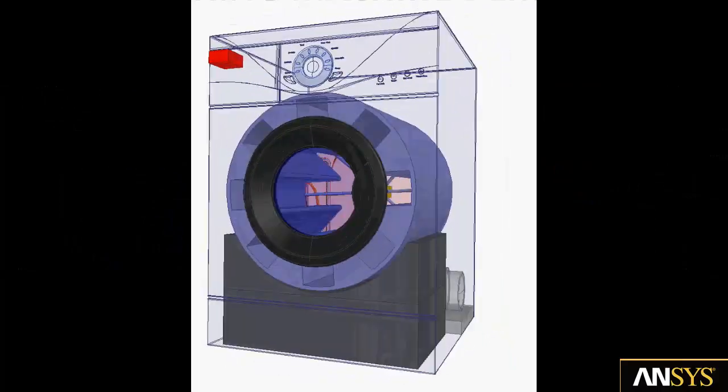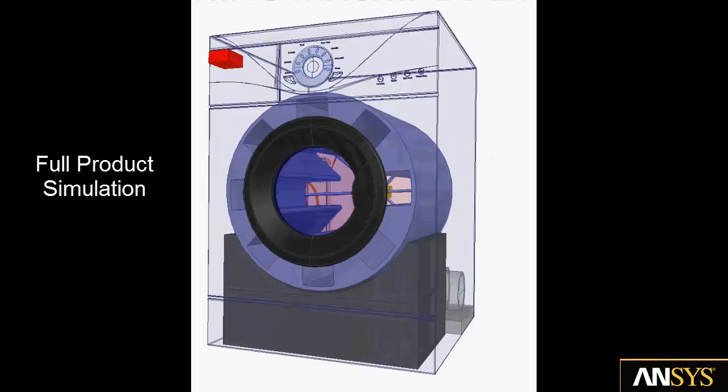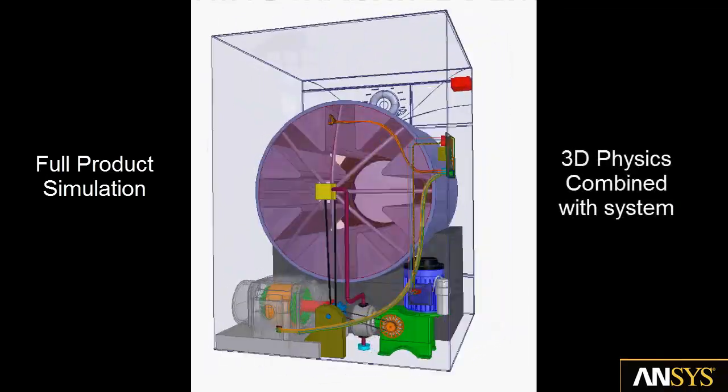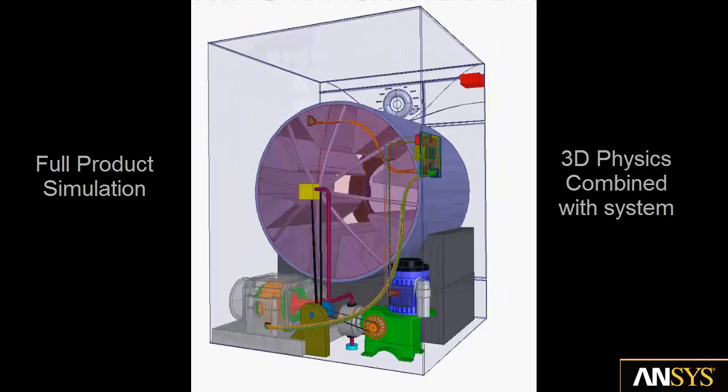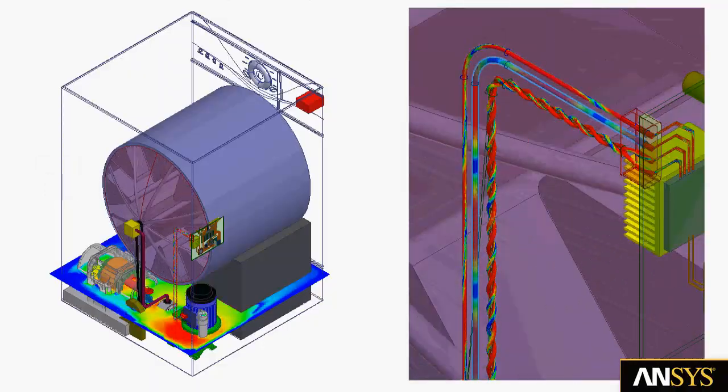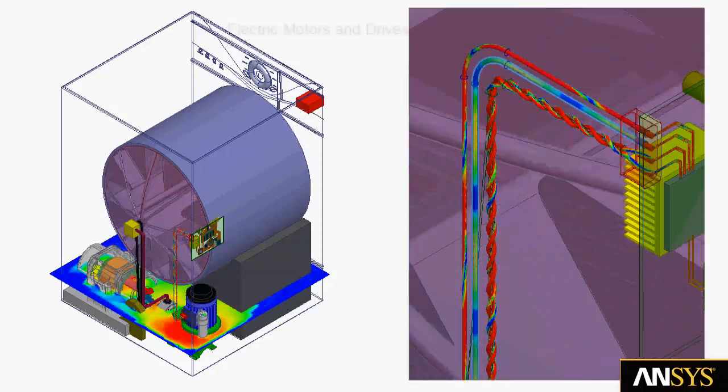In the next several minutes, we will demonstrate simulation technologies that enable full product simulation by combining 3D physics with system level analysis. The example is a washing machine that was created by ANSYS channel partner ESSS in Brazil.